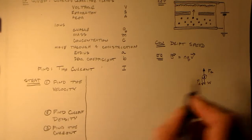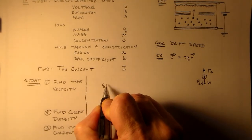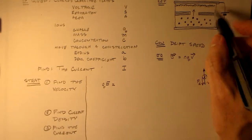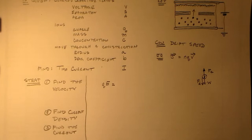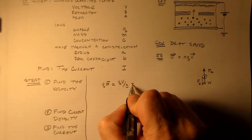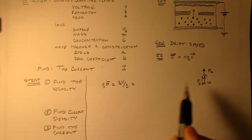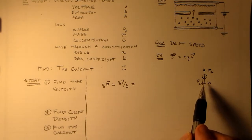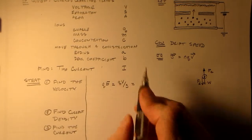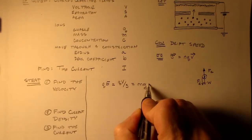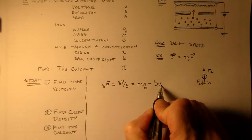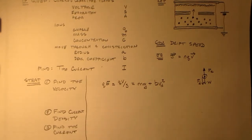So, the electric force is just Q times the electric field. And the electric field of this guy is basically V over S. So, we have QV over S. And then we have the drag velocity and the weight. The weight is Mg plus the drag velocity, which is BVD squared.